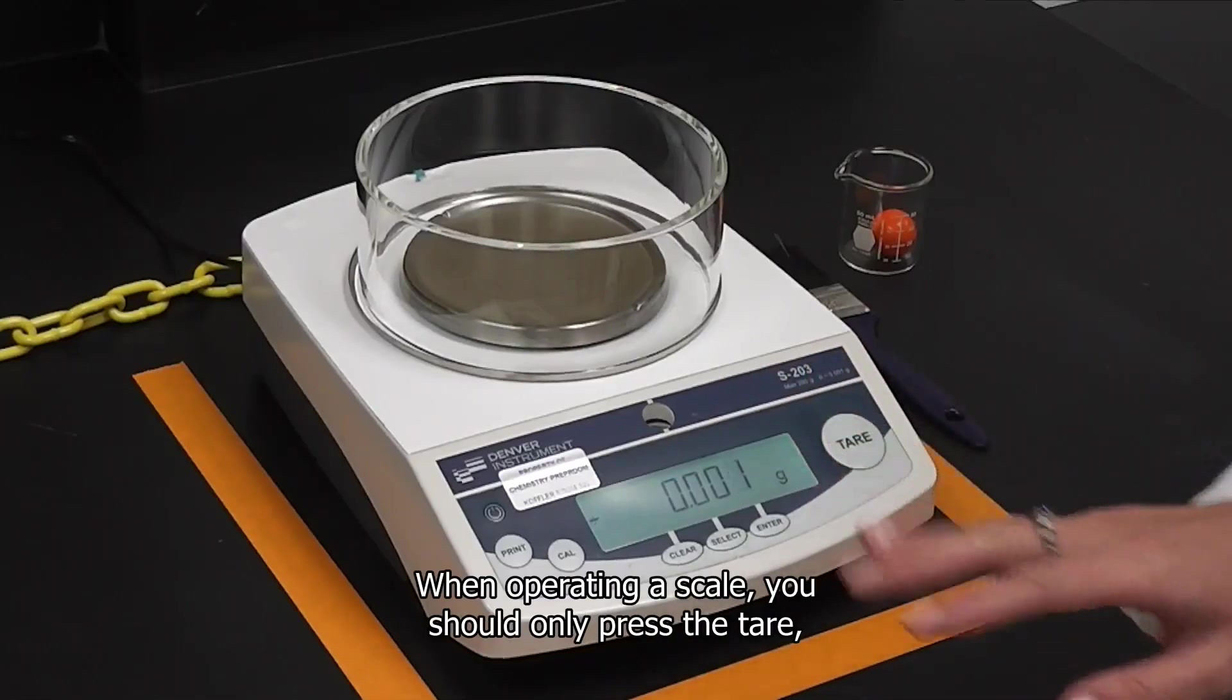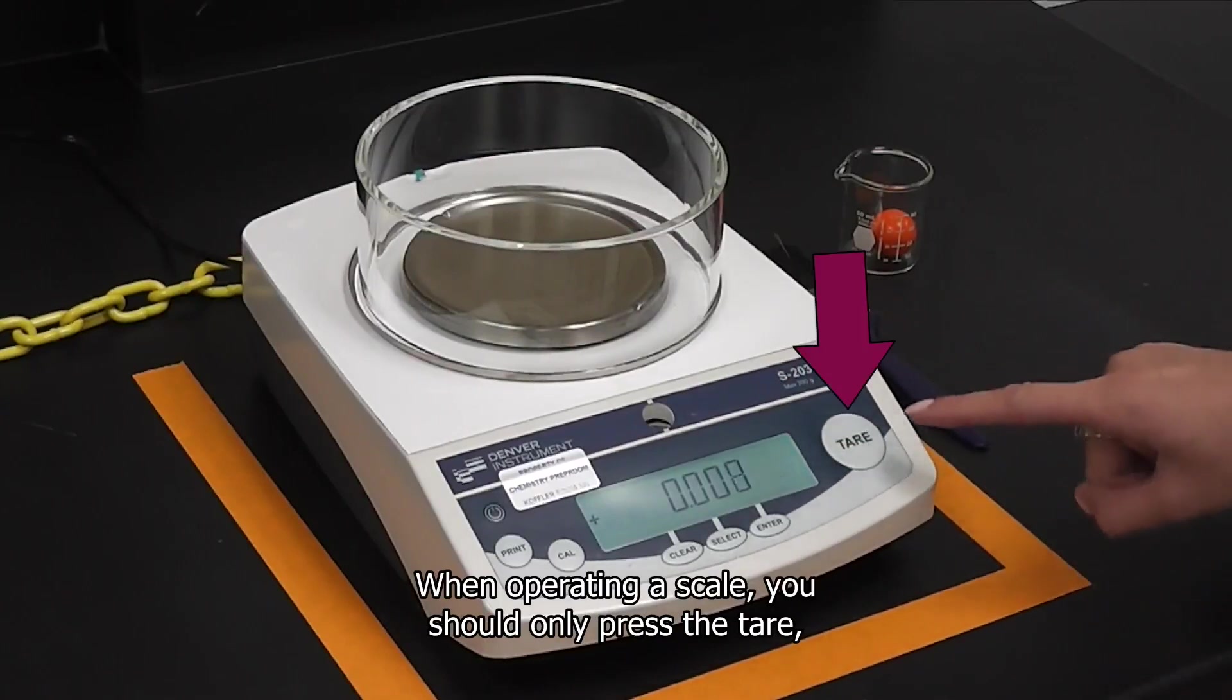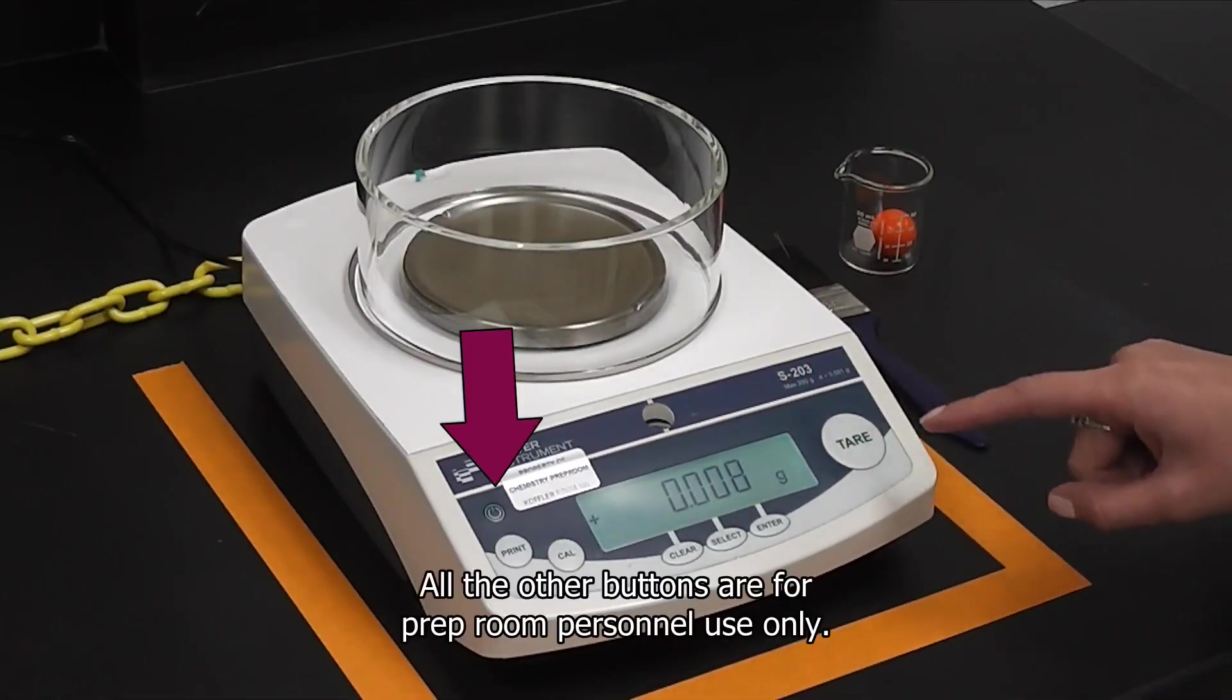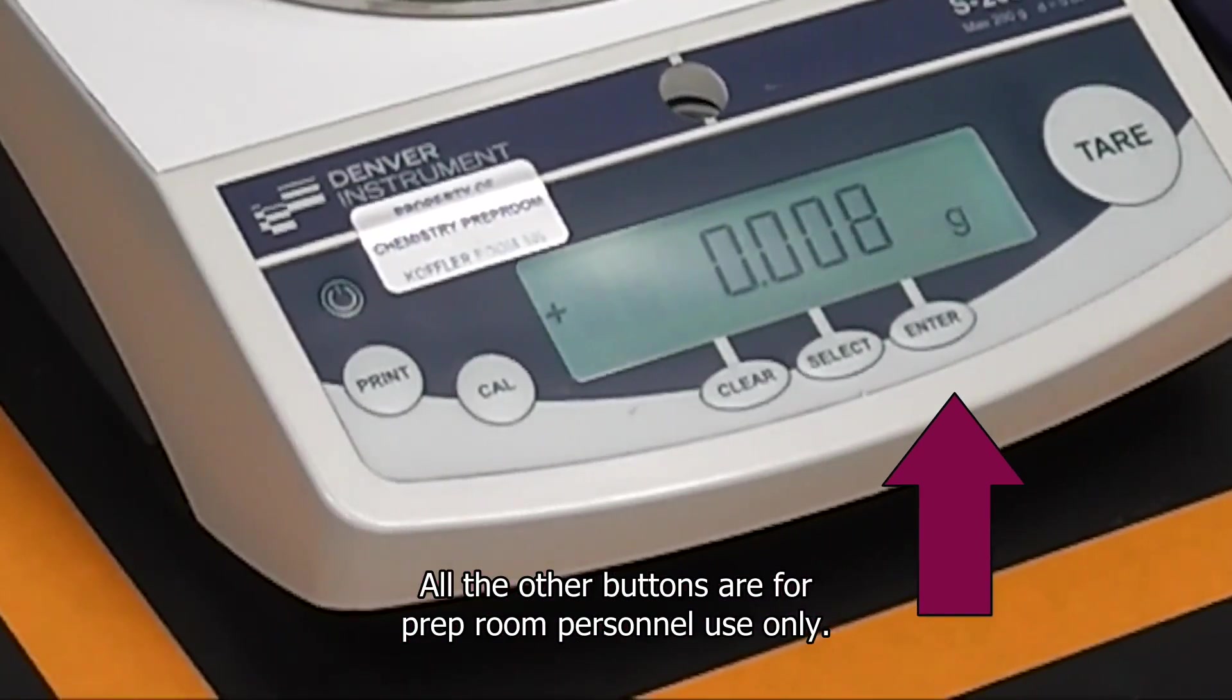When operating the scale, you should only press the tare or if needed the power button. All the other buttons are for prep room personnel use only.